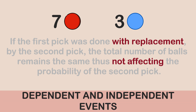For an independent event, we perform the experiment with replacement. After picking the first ball, we return it to the bag, keeping the total number of balls constant. This means the probability of picking the second ball is not affected by the probability used in picking the first ball — and that is the concept of an independent event.